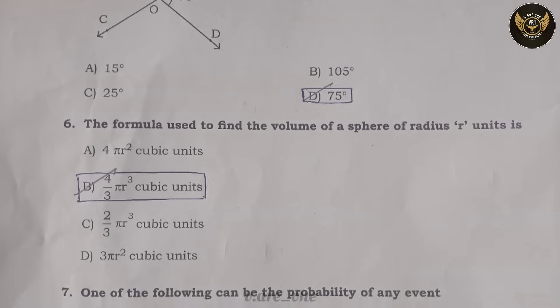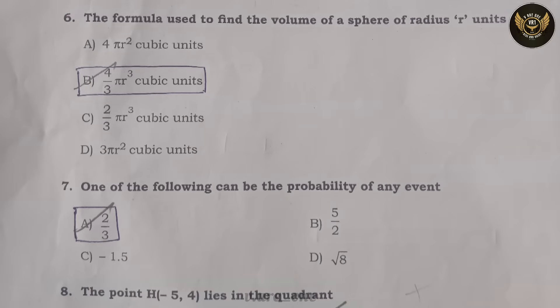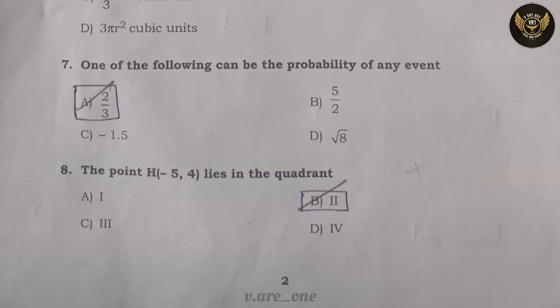Question 6: The formula used to find the volume of a sphere of radius r units is option B: 4/3 π r³ cubic units. Question 7: One of the following can be the probability of any event — option A: 2/3. Question 8: The point H(-5, 4) lies in option B: the second quadrant.